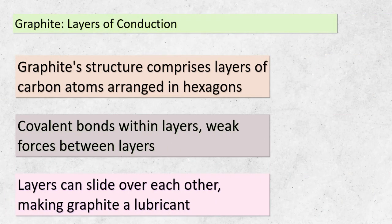Let's now shift our focus to graphite, another captivating covalent network solid. Graphite's structure is quite distinct from that of diamond. Here, carbon atoms form layers arranged in a hexagonal pattern. While covalent bonds within each layer are strong, the forces between the layers are relatively weak. This characteristic gives graphite an intriguing property — the layers can easily slide over one another. This sliding ability makes graphite an excellent lubricant. Furthermore, the arrangement of electrons in these layers results in something truly remarkable: graphite possesses electrical conductivity due to the availability of delocalized electrons, allowing them to move freely and carry electrical current.